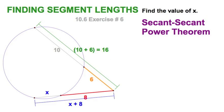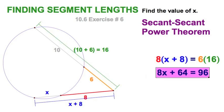Now, this one is going to give us a variable expression, and let's just set it, do the setup here. So, we've got the exterior times the whole secant equals the exterior times the whole secant, and a little bit of distributive, and then a little bit of subtraction,